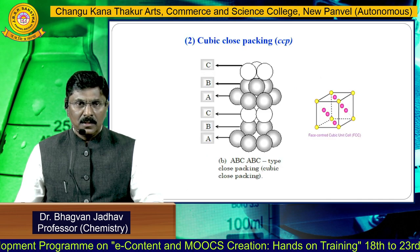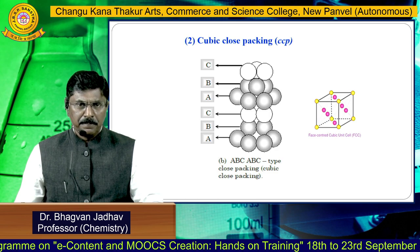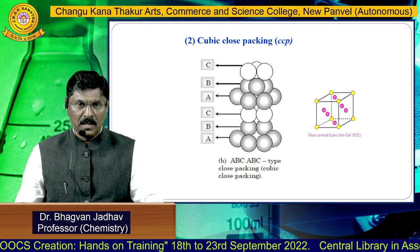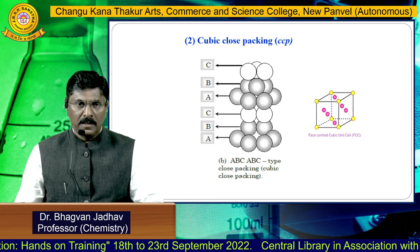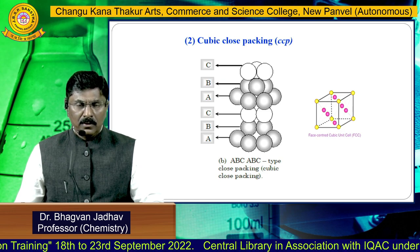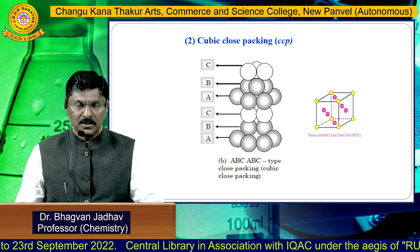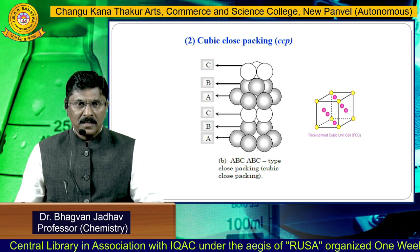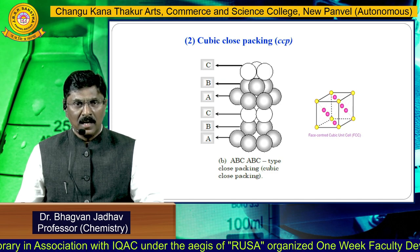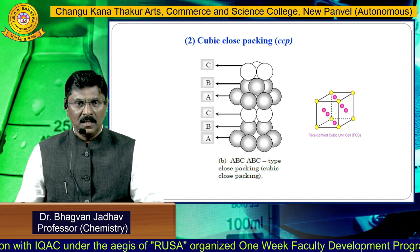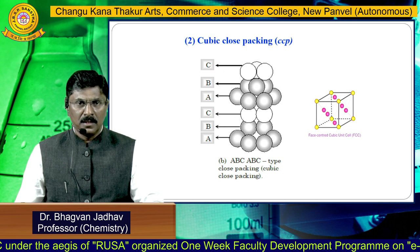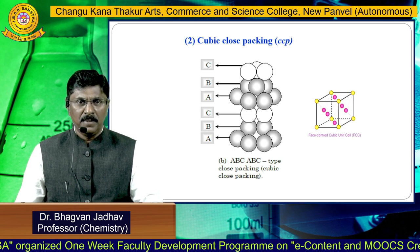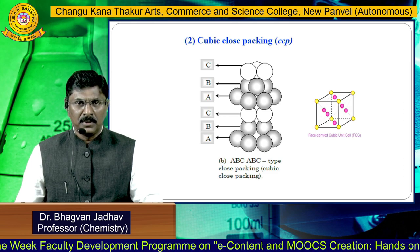In cubic close packing, the spheres are arranged in the first layer. When the second layer is stacked onto the first, it goes into the voids created by the first layer. When the third layer (C layer) is arranged, it is different — the spheres of the third layer occupy the unfilled hollows of the first layer. So there are three distinct layers: A, B, and C. The fourth layer is exactly the same as the first layer, giving ABC, ABC repetition. This gives the cubic close packing arrangement of rigid spheres (FCC).